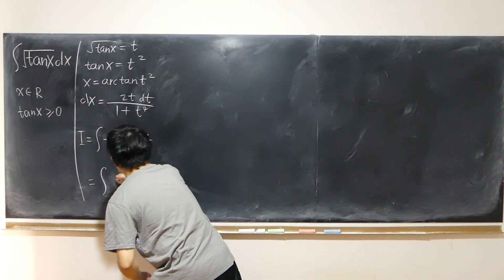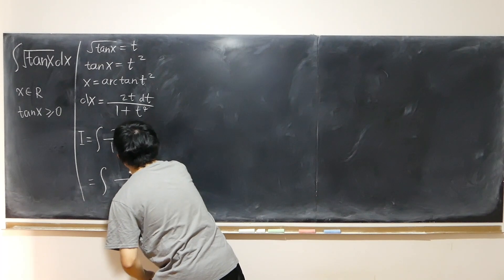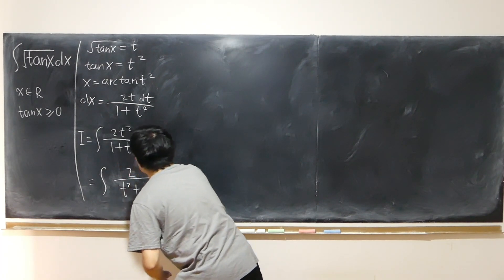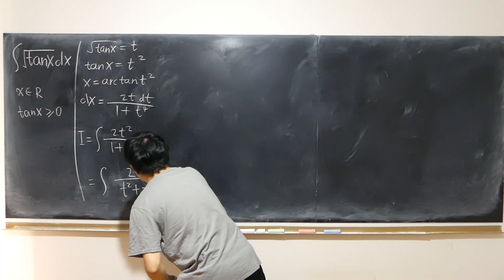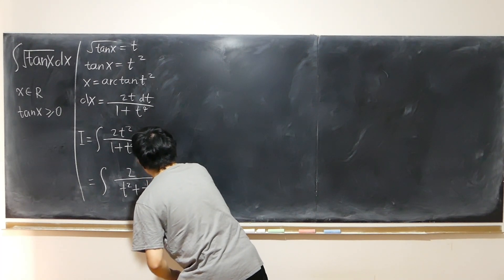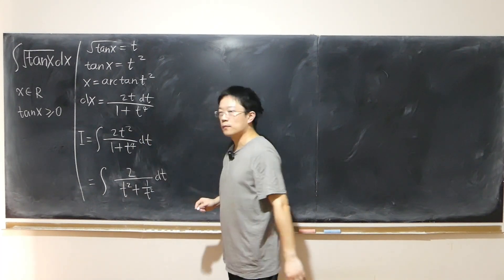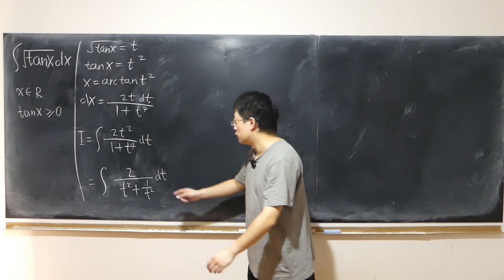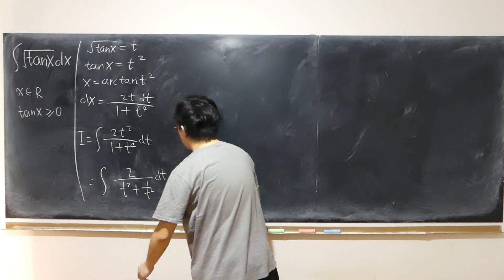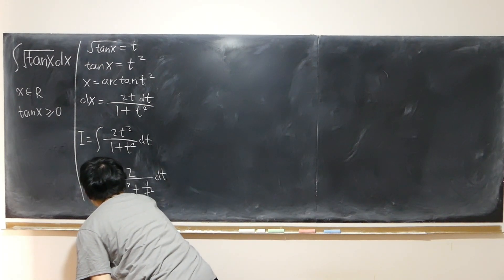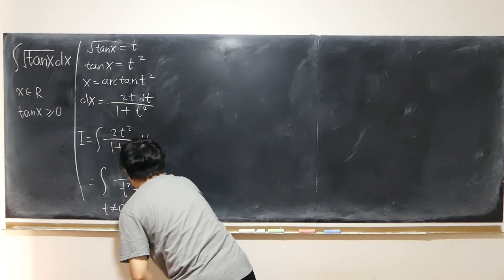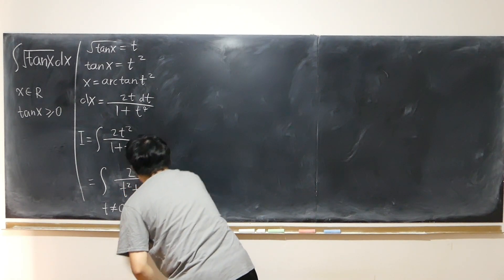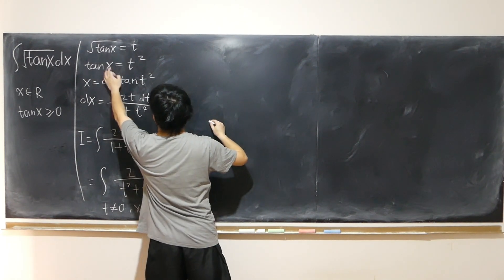That gives me 2 over t squared plus 1 over t squared dt. Of course, here I require t to be non-zero because we are doing the division. So t non-zero, in other words x non-zero.